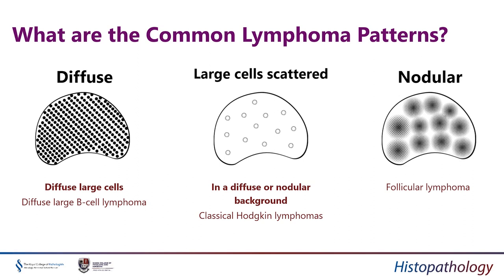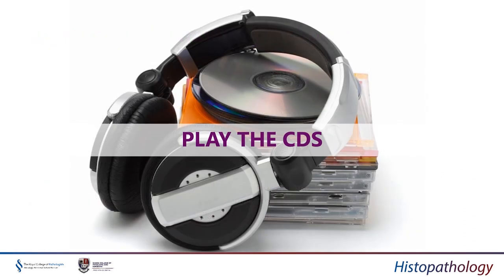The second step is to identify the pattern. Each entity has its own pattern, especially true for neoplasms whether malignant or benign. For lymphomas I always think of my common patterns: a diffuse pattern — a good example is diffuse large B-cell lymphoma. If I see something polymorphous with large cells scattered in a diffuse or nodular background, my first differential is classical Hodgkin lymphoma. If I have a nodular or follicular pattern, I think of follicular lymphoma. You can apply this to other neoplasms and even reactive conditions.